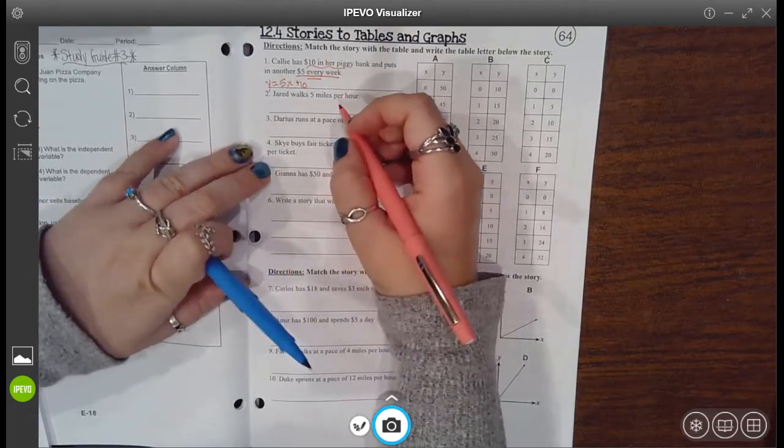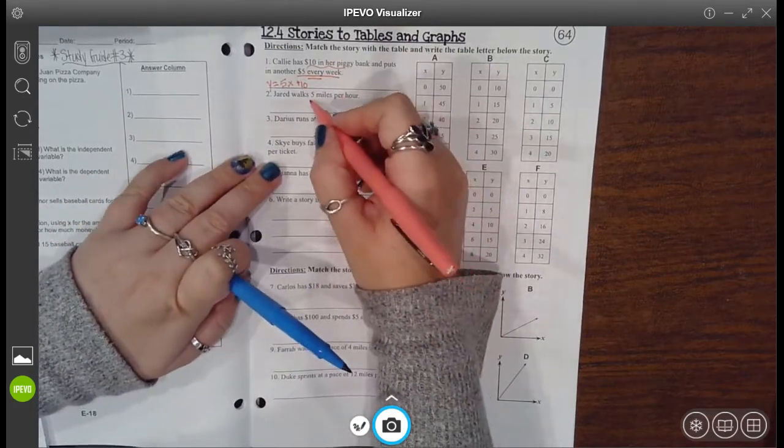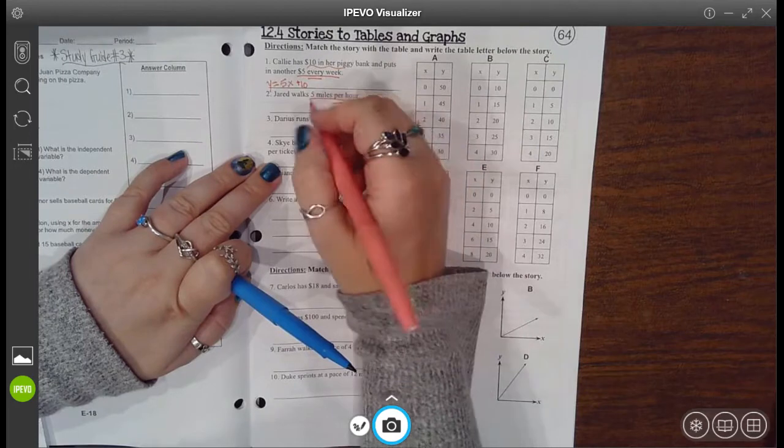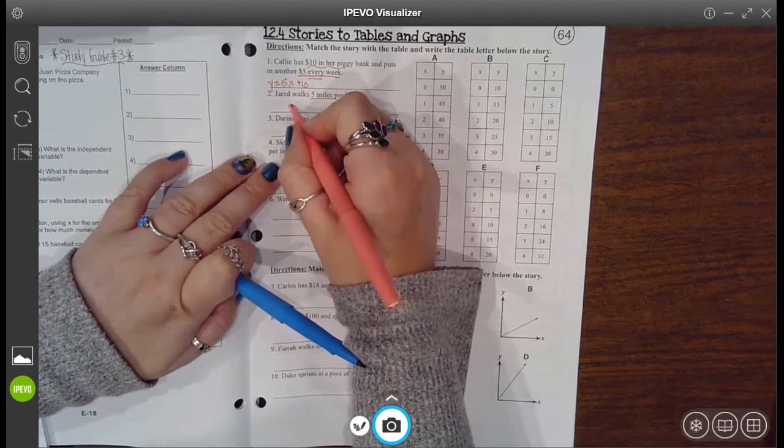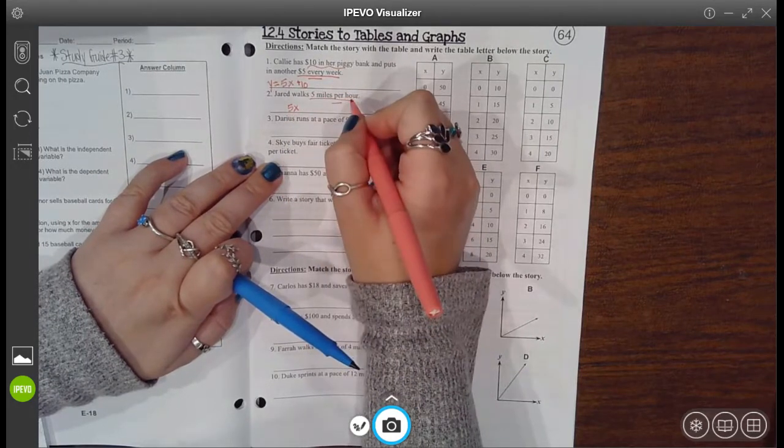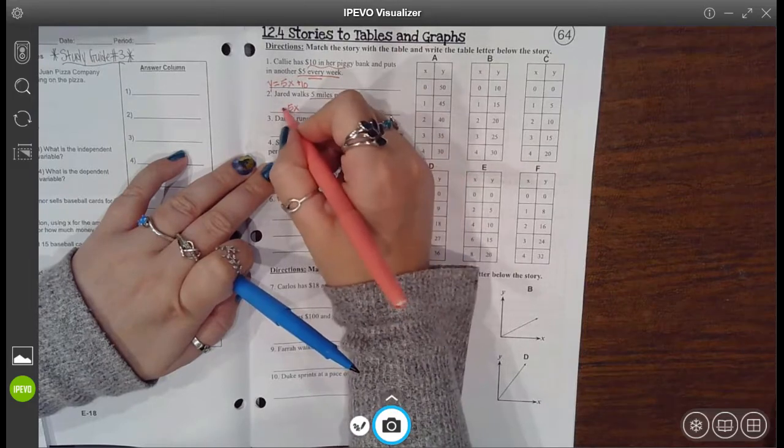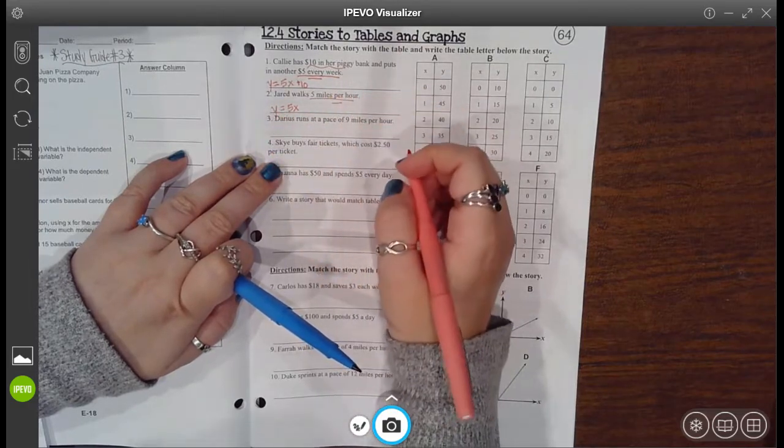Okay, this one says Jared walks five miles per hour. So my rate is five and it's going to be multiplied with my x, the number of hours, and that's equal to the number of miles. Okay, simple.